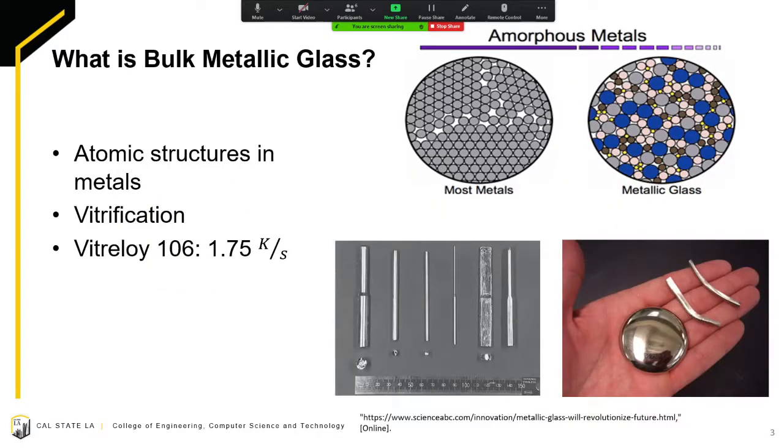Bulk metallic glass is a metal that has been supercooled as to not form a crystalline structure as shown in the images to the top right of this slide. This supercooling process is called vitrification and the metal that we will be using is Vitreloy 106, a zirconium-based metal. One reason why we're using this one is because of its relatively low critical cooling rate.